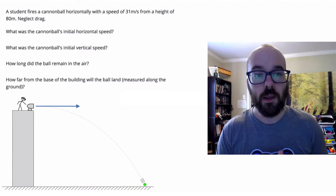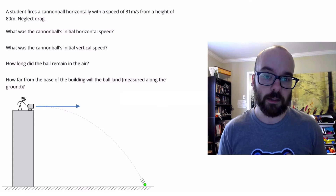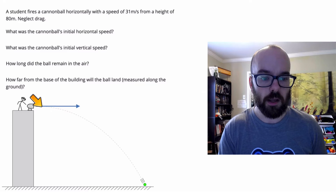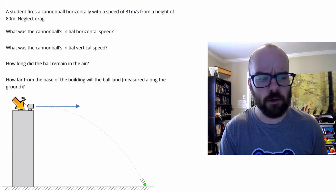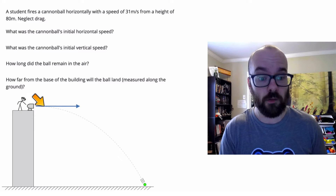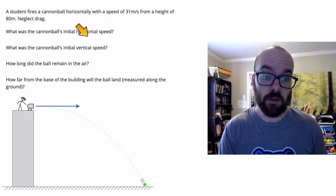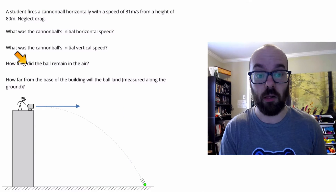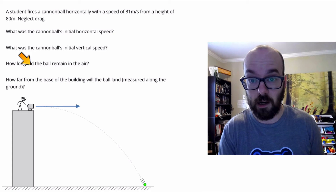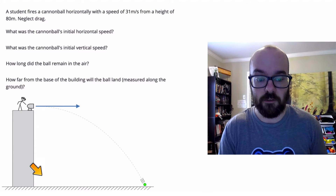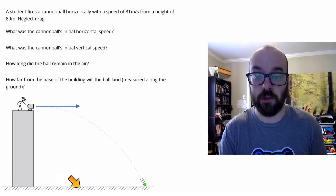Here's the problem: a student fires a cannonball horizontally with a speed of 31 meters per second from a height of 80 meters. We've got a student standing on top of a building, launching a projectile out of a cannon. It's going to land somewhere down below, and we want to know: how long did the cannonball remain in the air, and how far did it go from the base of the building when it lands?